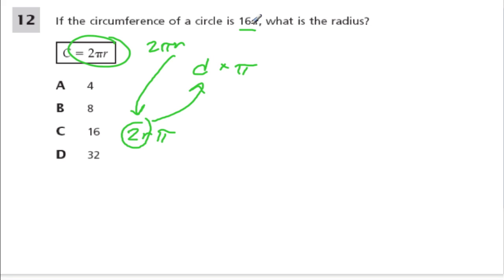So here we have diameter times pi. So that means they're giving us 16 pi, which is 16 times pi. So they're telling us the diameter is 16 because it's diameter times pi, or 16 times pi. And the radius would be half of that.